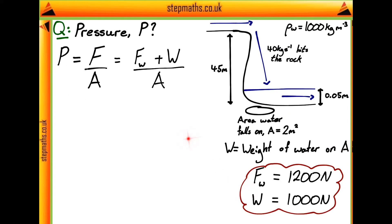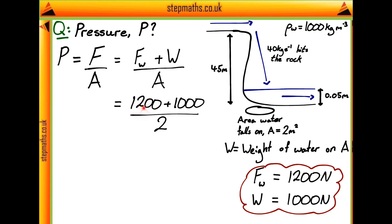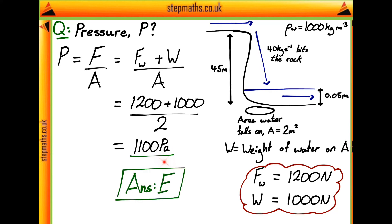Plugging these two forces in, the total force is 2,200 newtons. Dividing by the area of 2 metres squared, we get a final pressure of 1,100 pascals. This final answer corresponds to answer E given in the question.